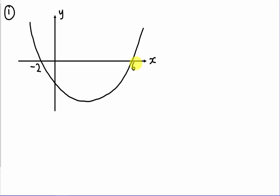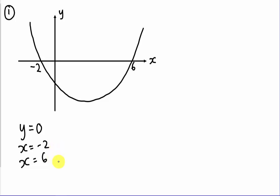The first thing is to pay attention to the x-axis. When y equals zero, the x-intercepts are negative 2 and 6 — meaning when y equals zero you get x equals negative 2 or x equals 6. So you can write: (x + 2)(x − 6) = 0.